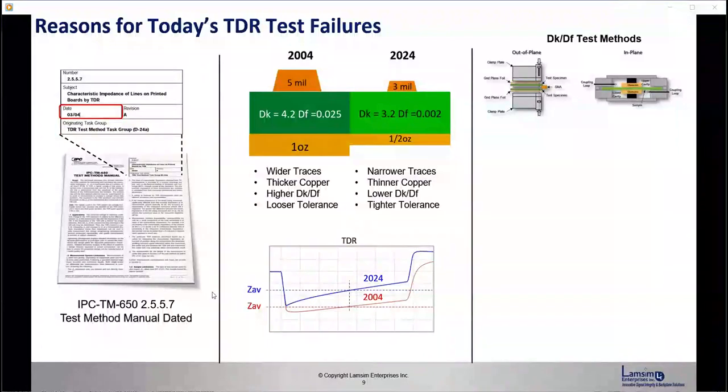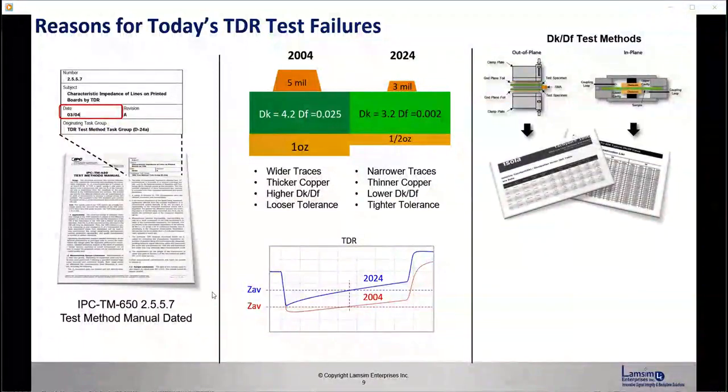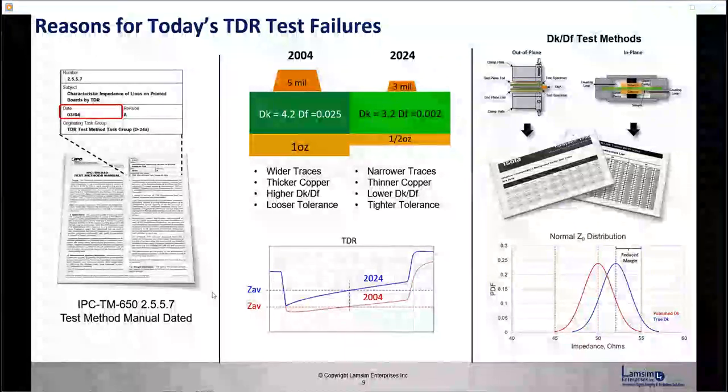Also, some DK/DF test methods affect your impedance calculations. And those test methods find their way into the DK/DF construction tables. And those construction tables are used to do your impedance calculations.